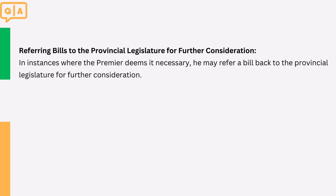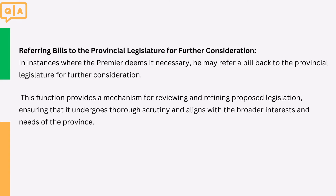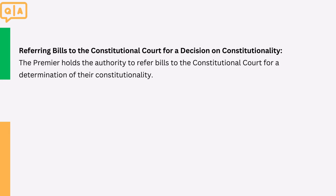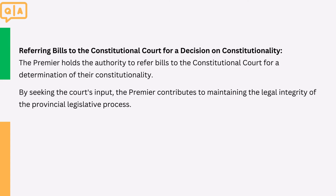4. Referring bills to the provincial legislature for further consideration. In instances where the premier deems it necessary, he may refer a bill back to the provincial legislature for further consideration. This function provides a mechanism for reviewing and refining proposed legislation, ensuring that it undergoes thorough scrutiny and aligns with the broader interests and needs of the province. 5. Referring bills to the constitutional court for a decision on constitutionality. The premier holds the authority to refer bills to the constitutional court for a determination of their constitutionality. By seeking the court's input, the premier contributes to maintaining the legal integrity of the provincial legislative process.